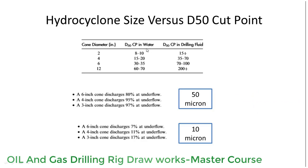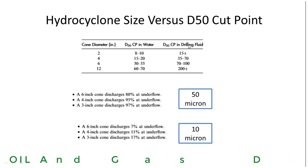The cut point of a hydrocyclone cone will depend on the feed slurry or mud. For a 50 micron solid particle, a 6 inch cone discharges 80% at the underflow, a 4 inch cone discharges 95% at the underflow, whereas a 3 inch cone discharges 97% at the underflow. This is for the D50 cut point.